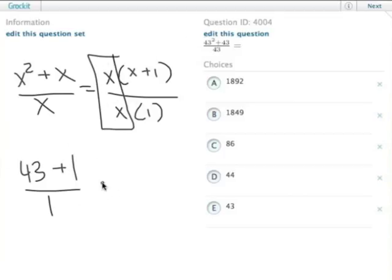1 over 1 is the same thing as 43 plus 1, which is the same thing as 44. Choice D.